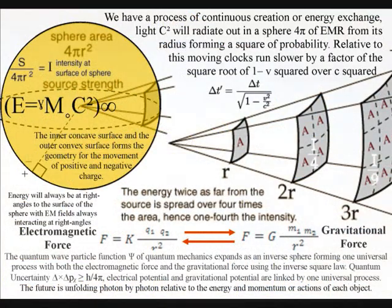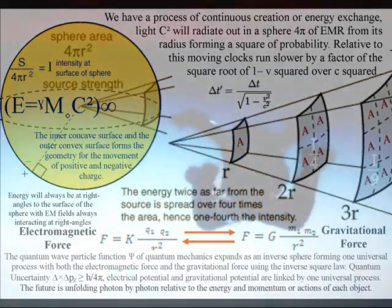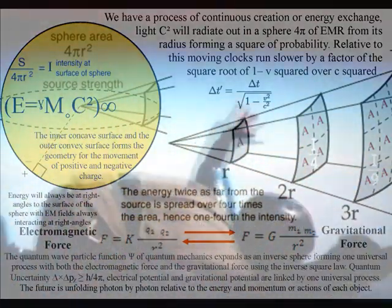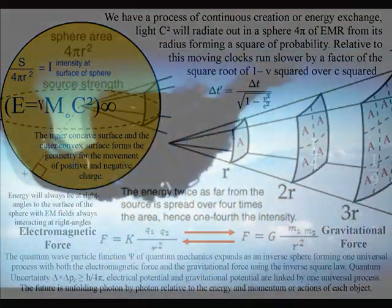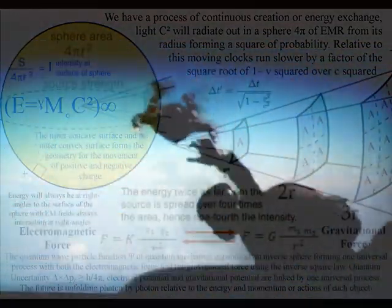The same dynamic spherical geometry can be seen with electromagnetism and gravity sharing the inverse square law, representing the geometry of this universal process, with gravitation being a secondary force to electromagnetism.